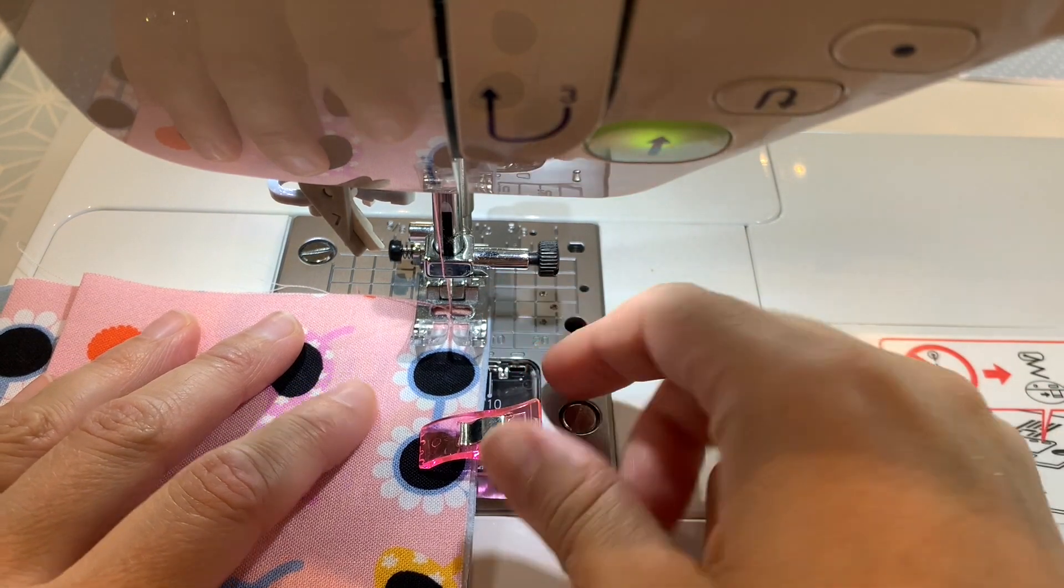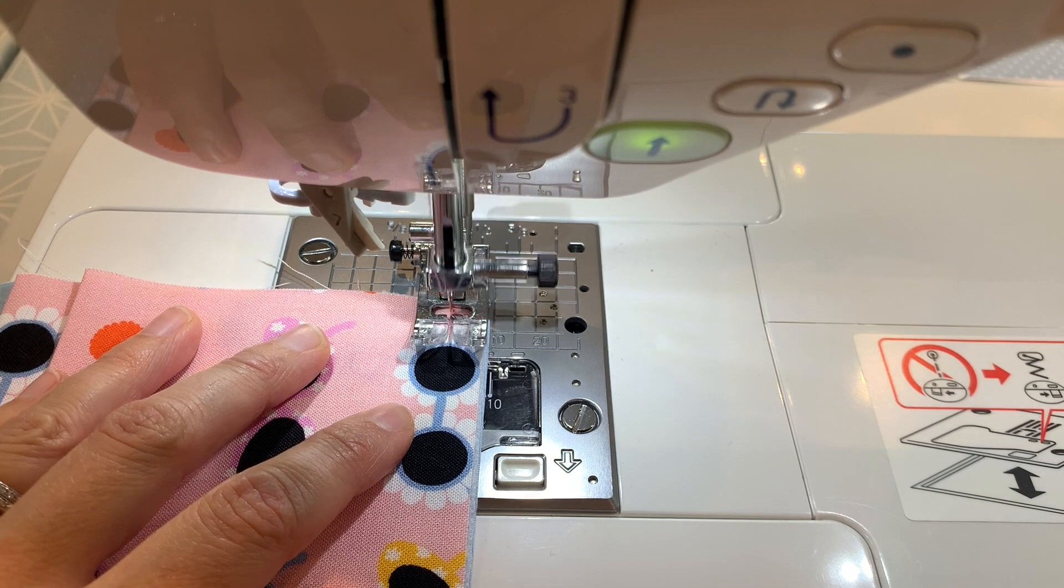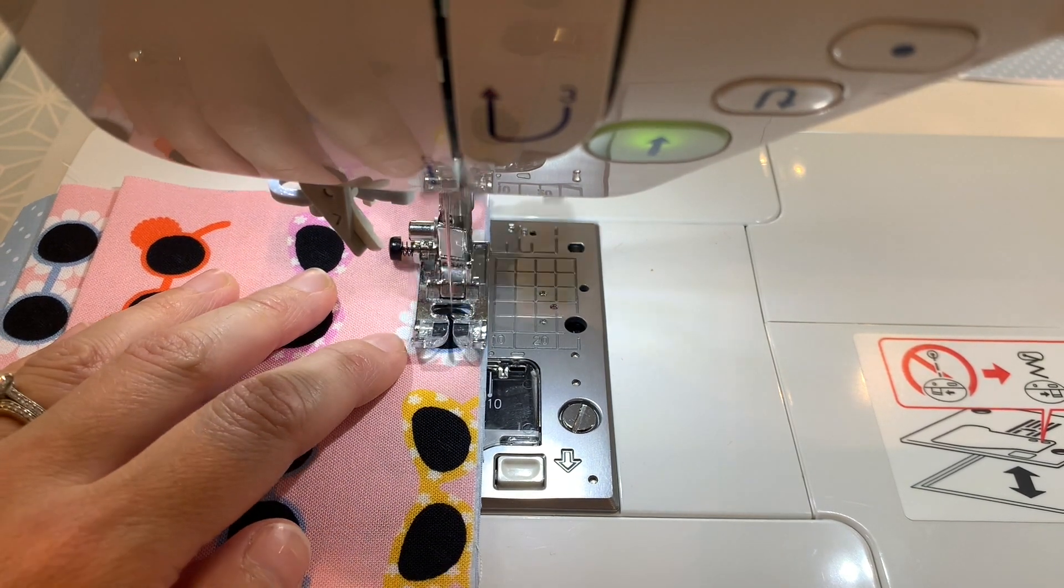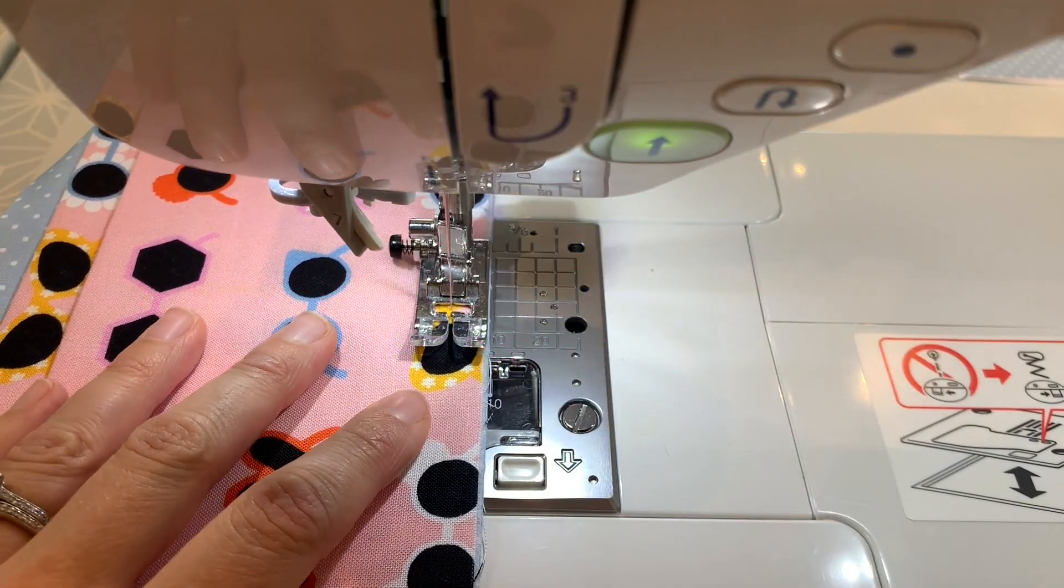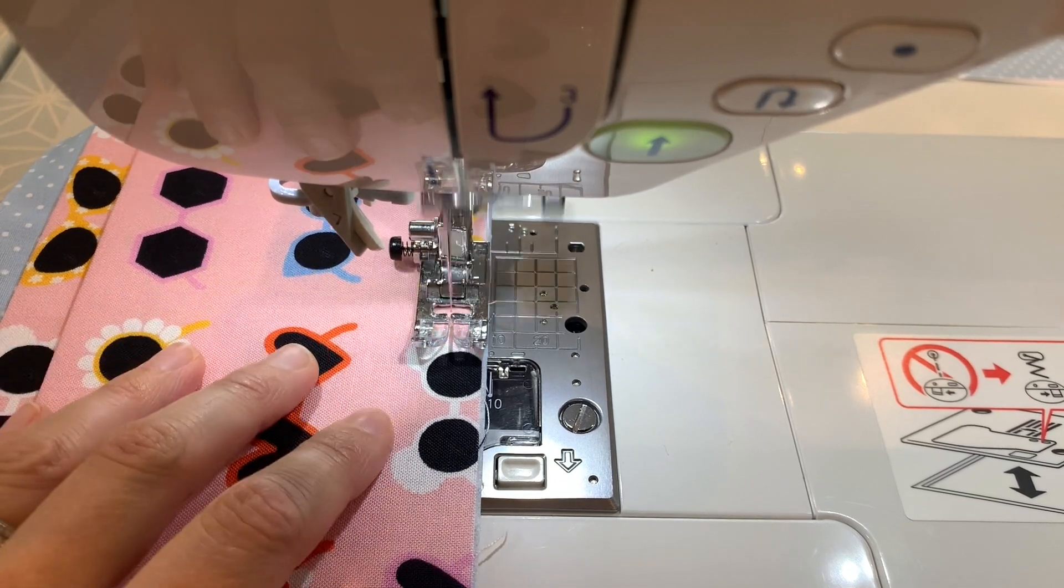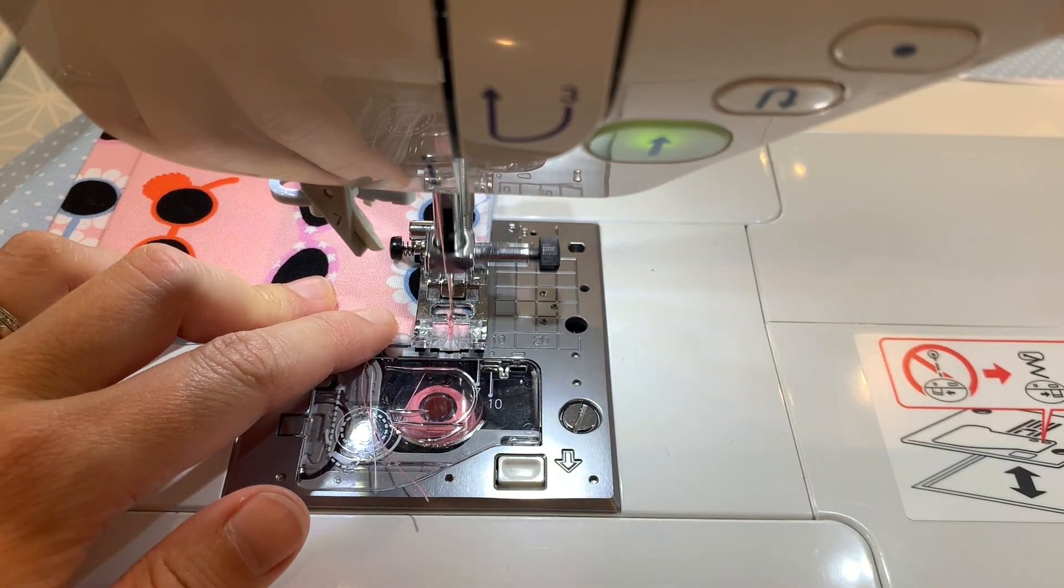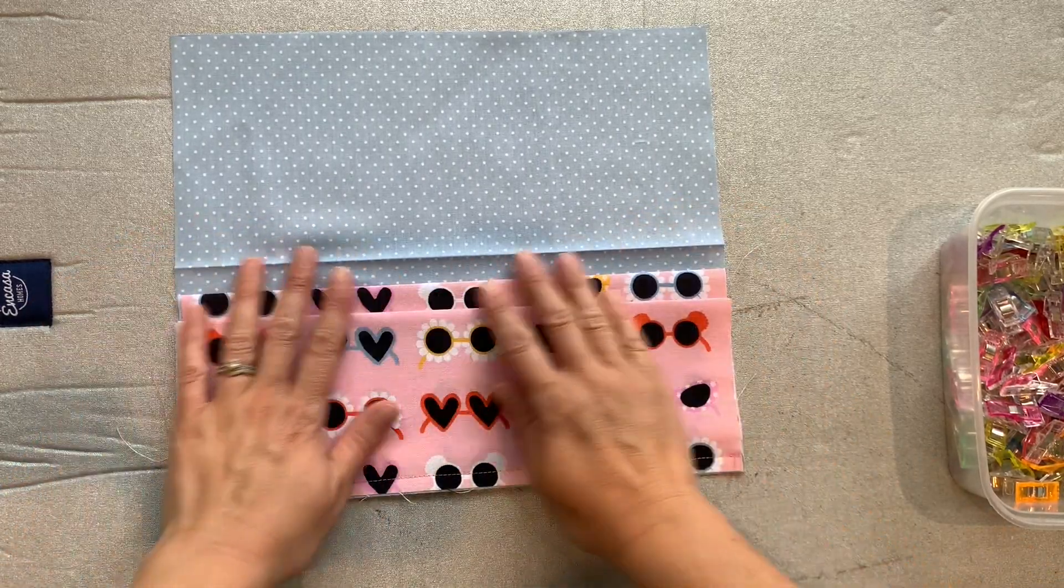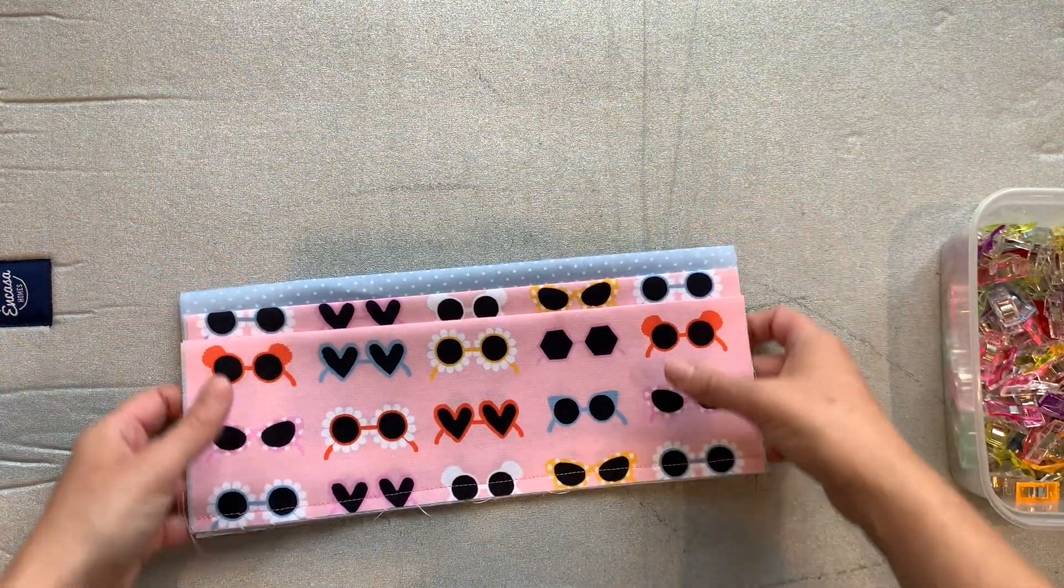So I'm going to line up my foot with the edge there again. All these stitches will eventually be hidden by the binding. Back stitch to end. So there are my two pockets attached to my other pocket and what I can do now is now just fold that in half.